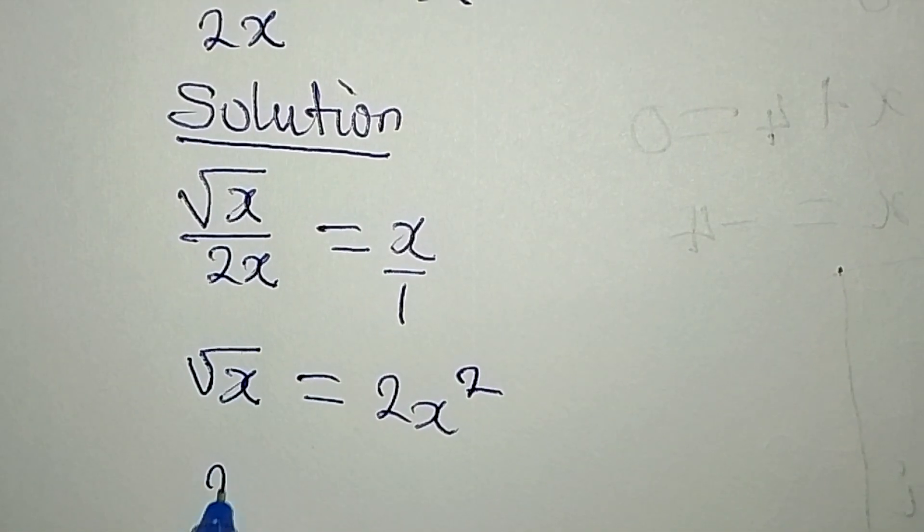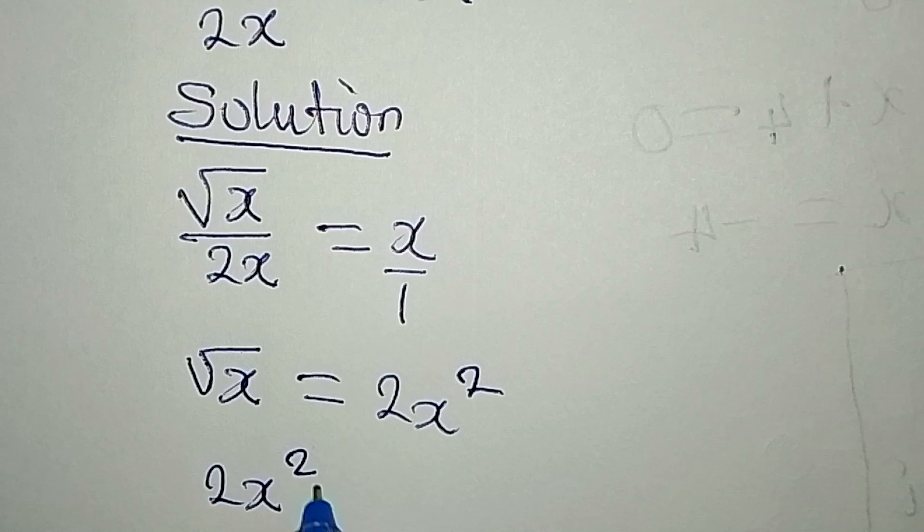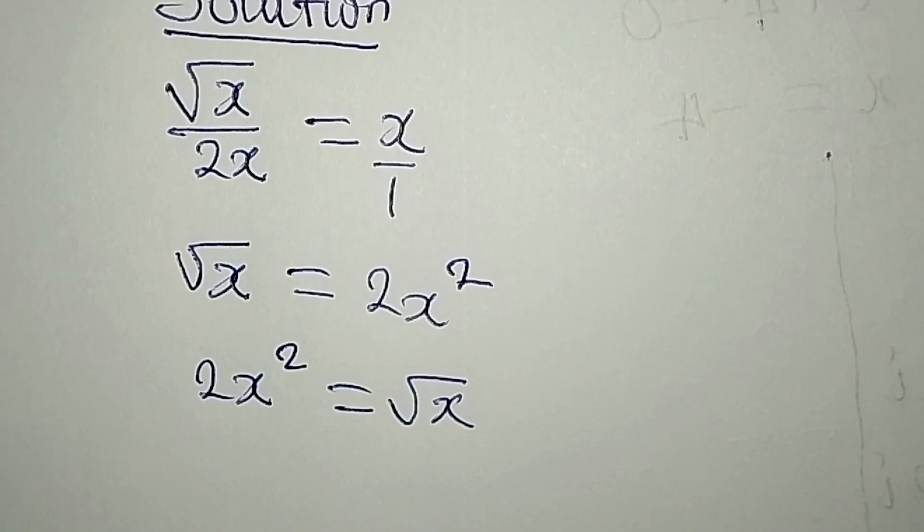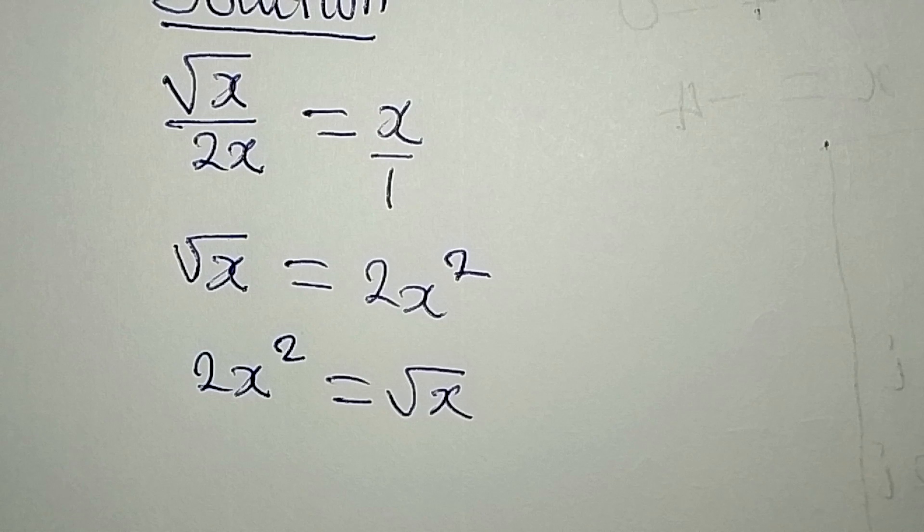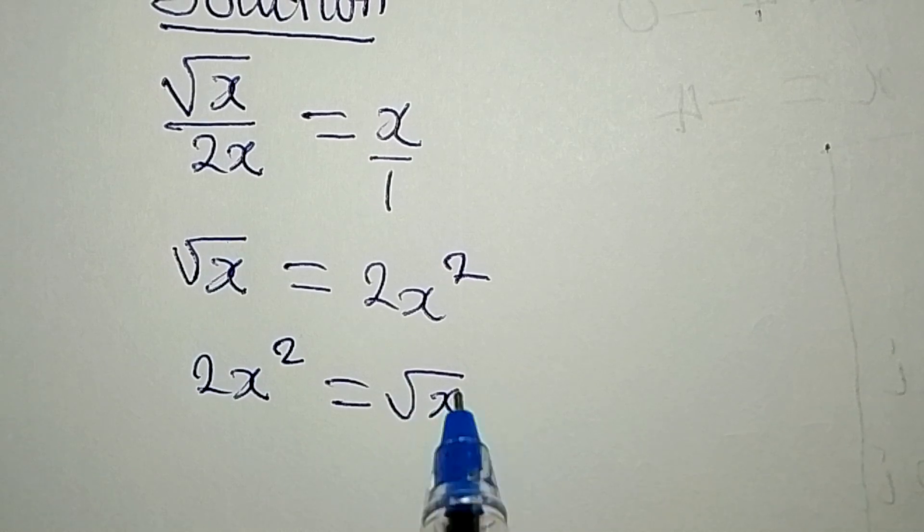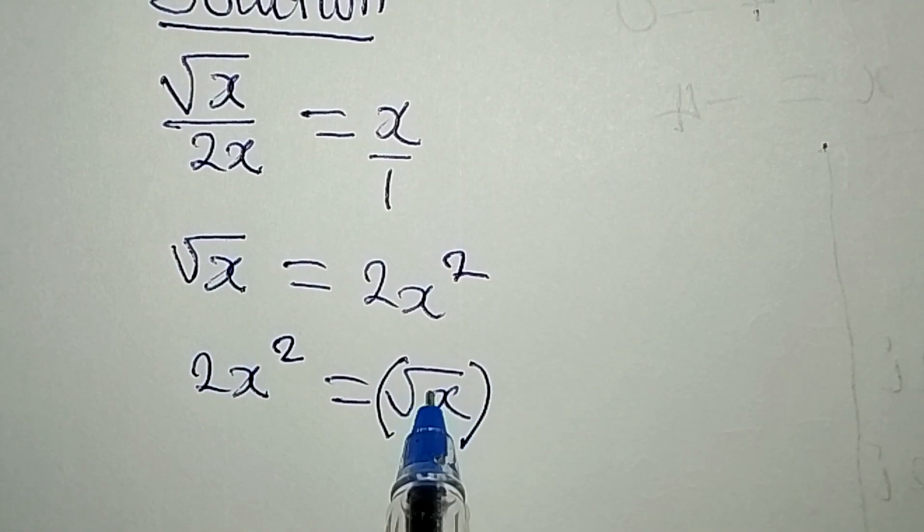Now we have 2x squared equal to square root of x. As a matter of fact, anyone can come first just like I did. Now what do I do? I'm going to eliminate this square root by squaring it.